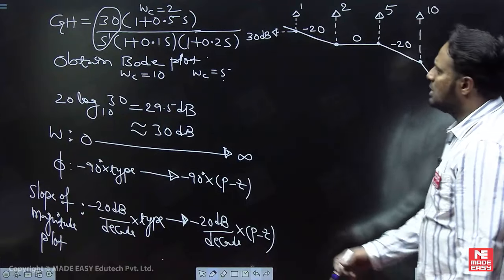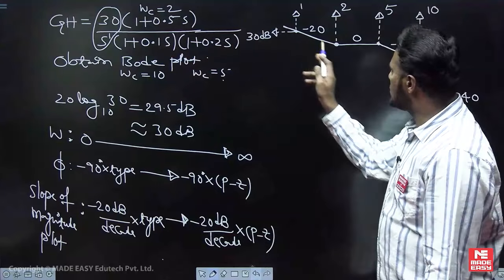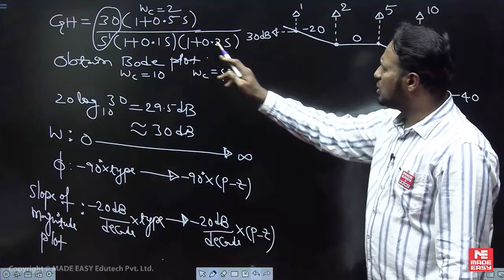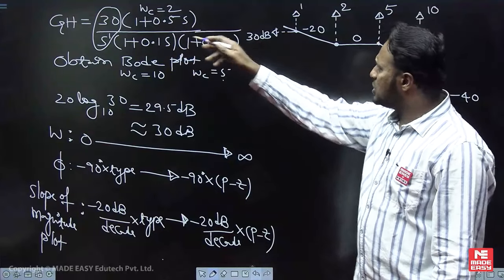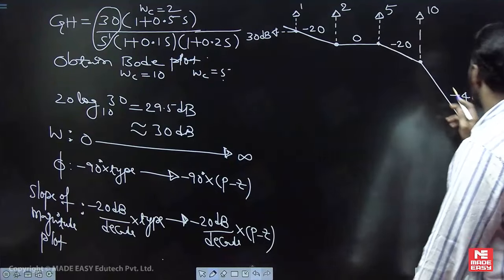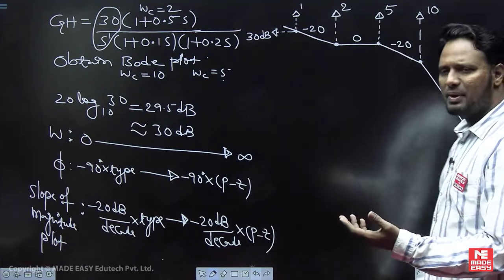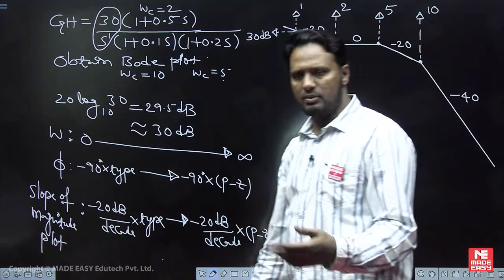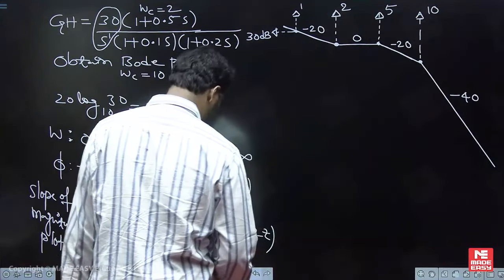For type 1 system: initial slope is minus 20, and since p minus z equals 2, the final slope is minus 40. This will be helpful for further discussions.